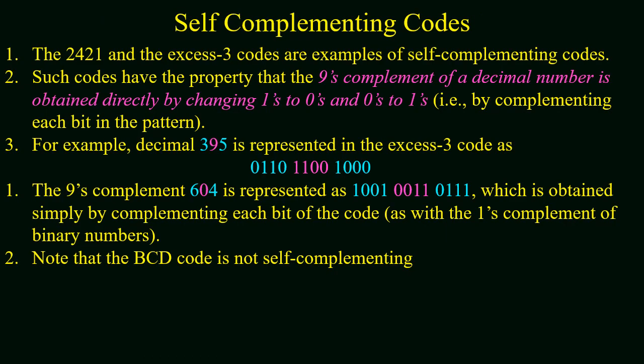Now the self-complementing codes. 2421 and XS3 codes are the self-complementing codes. These codes have a property such that the 9's complement of a decimal number is obtained directly by changing the 1s into 0s and 0s into 1s, that is by complementing each bit in the pattern.